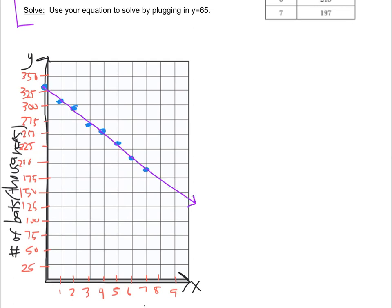And I'm going to pick two dots that it goes through. It looks like it goes through, I don't know, let's use this dot and this dot. So those are the points 1, 306, and 7, 197.